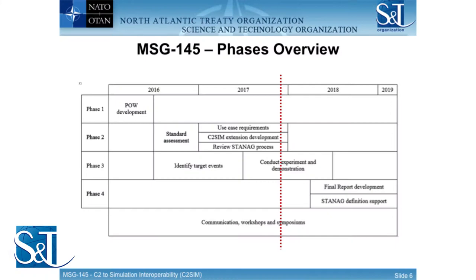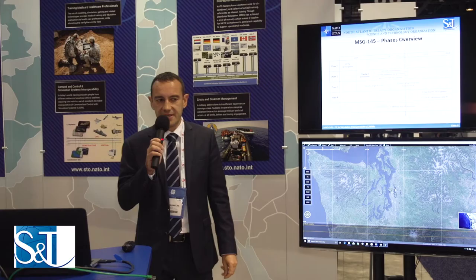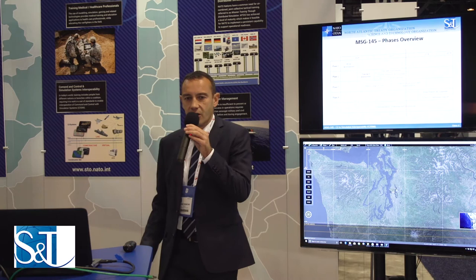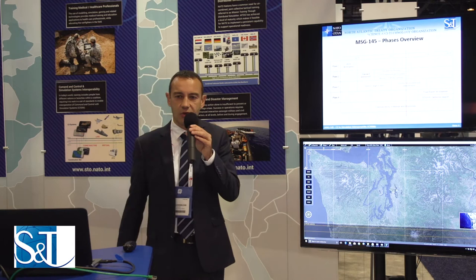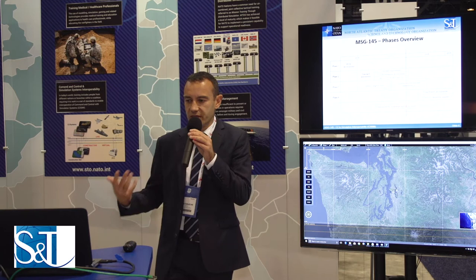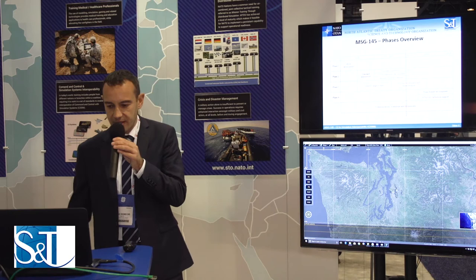This is the roadmap — the different activities scheduled at the beginning of this technical activity. We started in 2016 and are more or less in the middle. We started with a theoretical C2SIM standard assessment, and right now we are in the implementation and experimentation phase, experiencing different use cases where C2SIM is applied. Next year we move to final report development and advancing the STANAG.